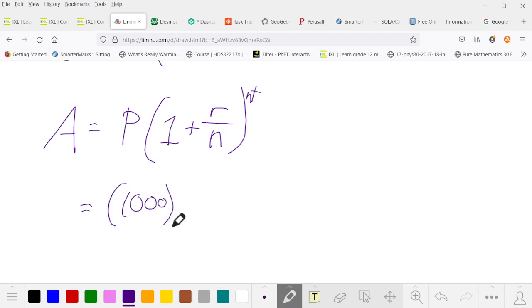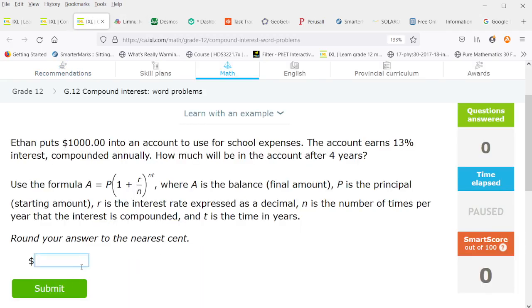So Ethan has set aside a thousand dollars, the interest rate is 0.13 and it's compounded annually. So that's one period per year and four years. So this simplifies to one thousand times one point one three exponent four, which is $1,630.47.